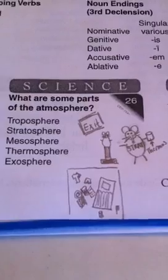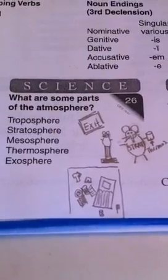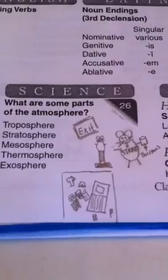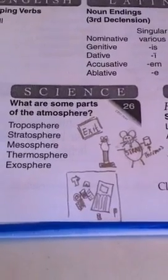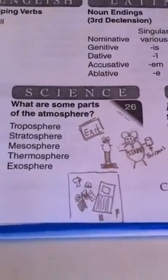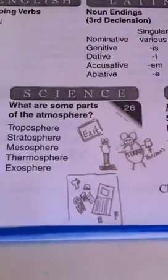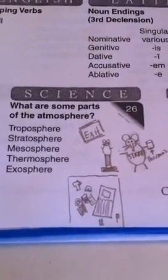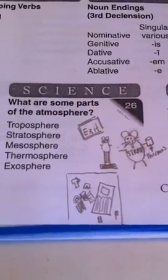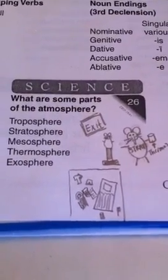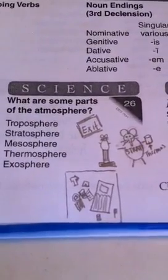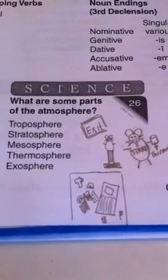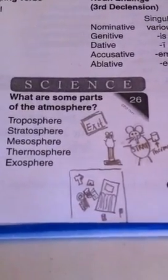All right, my kids think that troposphere kind of sounds like a trophy, and strat rhymes with rat. So we've got strat the rat, and he wins a trophy, troposphere, for having the messiest room, mesosphere. And so he's taking his thermos of cheese soup, thermosphere, and he's exiting exosphere into part of Let's Go Fly a Kite from Mary Poppins.